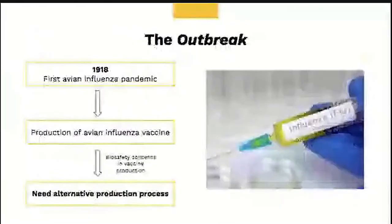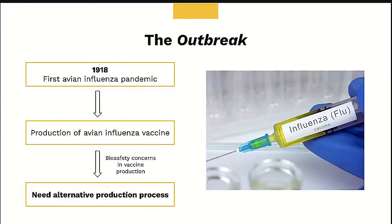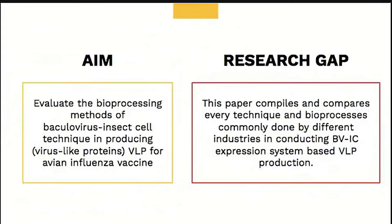Vaccination is one of the crucial first lines of defense against outbreaks such as the influenza virus pandemic. It was reported that influenza virus pathogenicity caused biosafety concerns to arise in vaccine production. Therefore, another alternative production process is highly required. Through this paper, we aim to evaluate the bioprocessing method of an alternative vaccine production system that uses insect cells infected by Baculovirus to rapidly produce VLP.